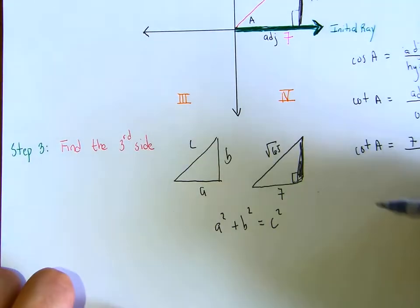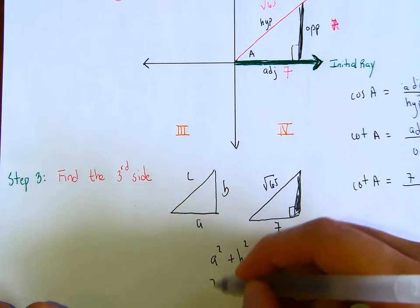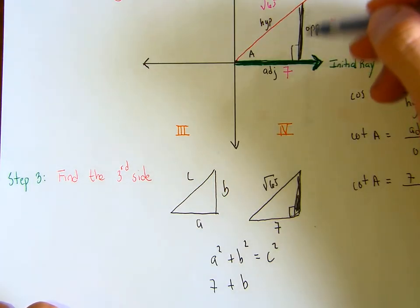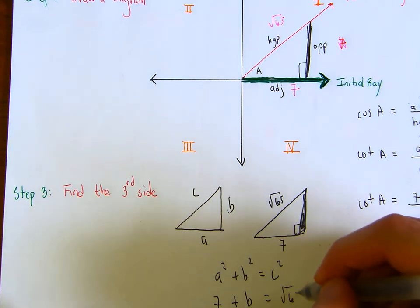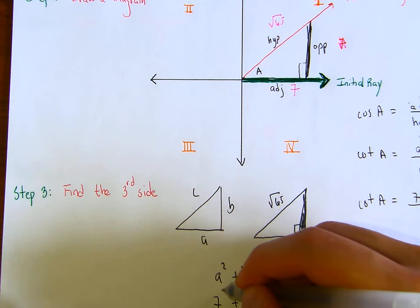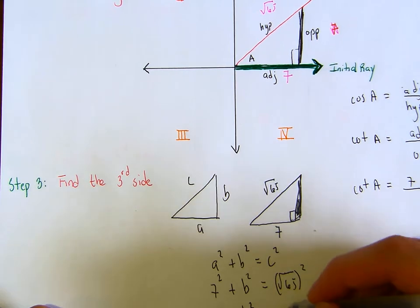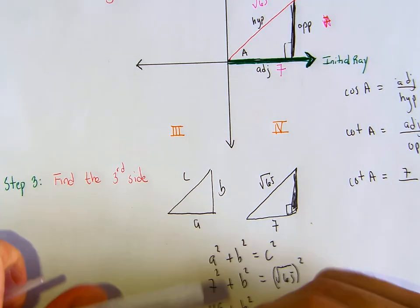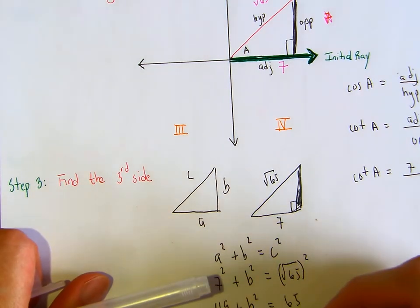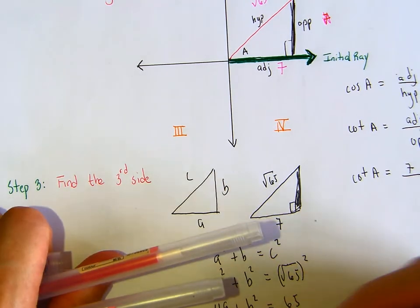To find this opposite side, we use the Pythagorean theorem: a² + b² = c². What is our value of a? It's 7. What's b — the opposite side? We don't know. What's the hypotenuse? Square root of 65. We're going to square each one: 49 plus b squared equals — well, square root of 65 squared is 65. Then we subtract 49 from both sides: b squared equals 16.